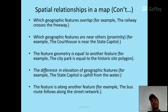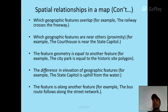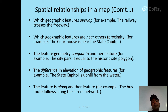More spatial relationships: which geographic features overlap — for example, the railway crosses the freeway; which geographic features are near others — for example, the courthouse is near the state capital; feature geometry equal to another feature — for example, the city park is equal to the historic state polygon; difference in elevation — for example, the state capital is uphill from the water; and which feature is along another feature — for example, the bus route follows along the street network.